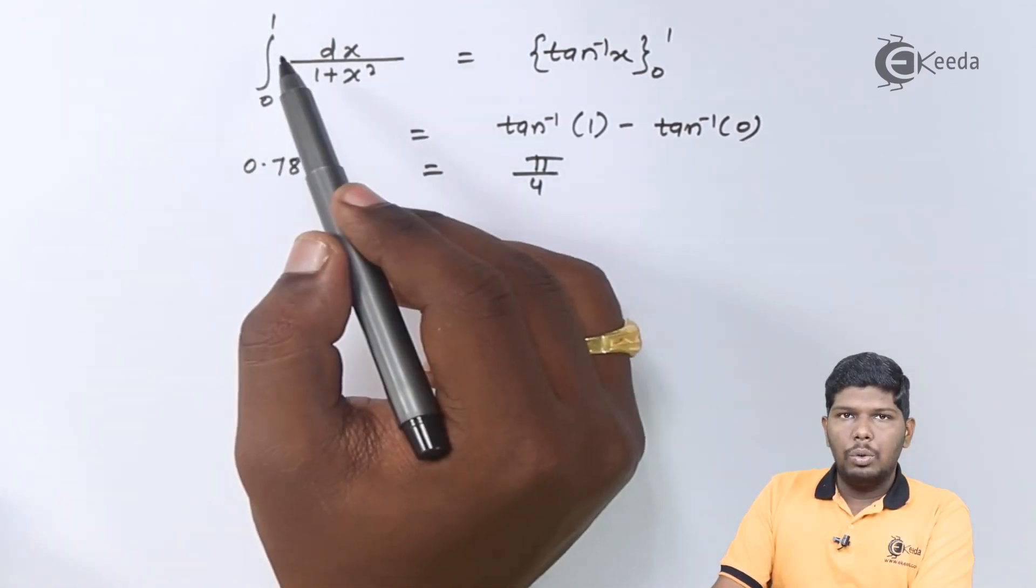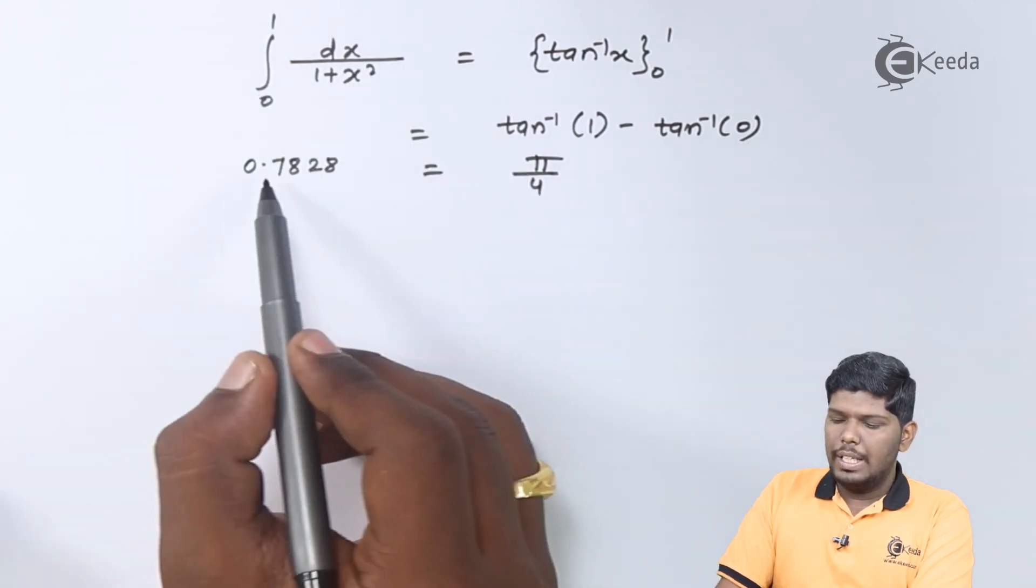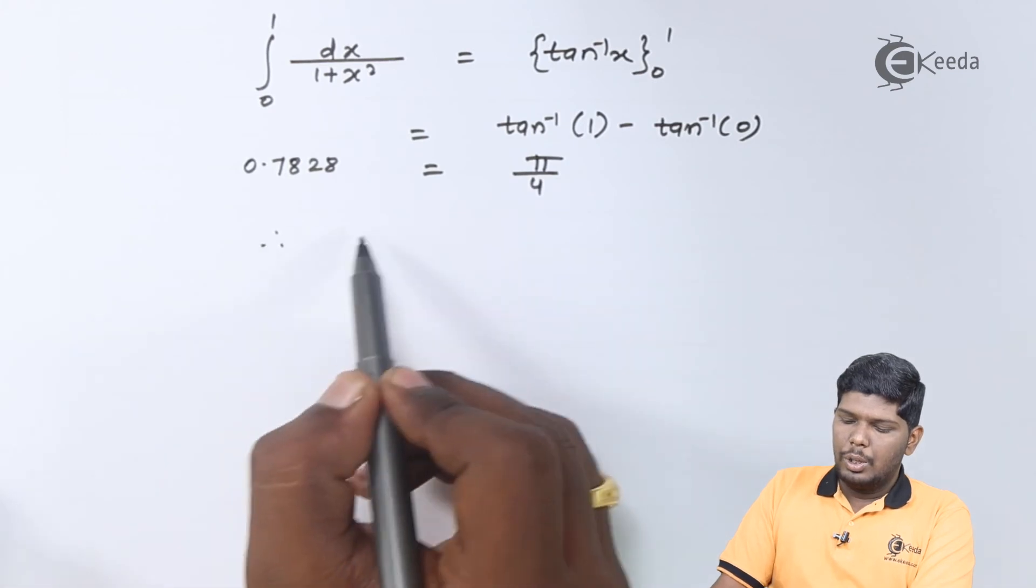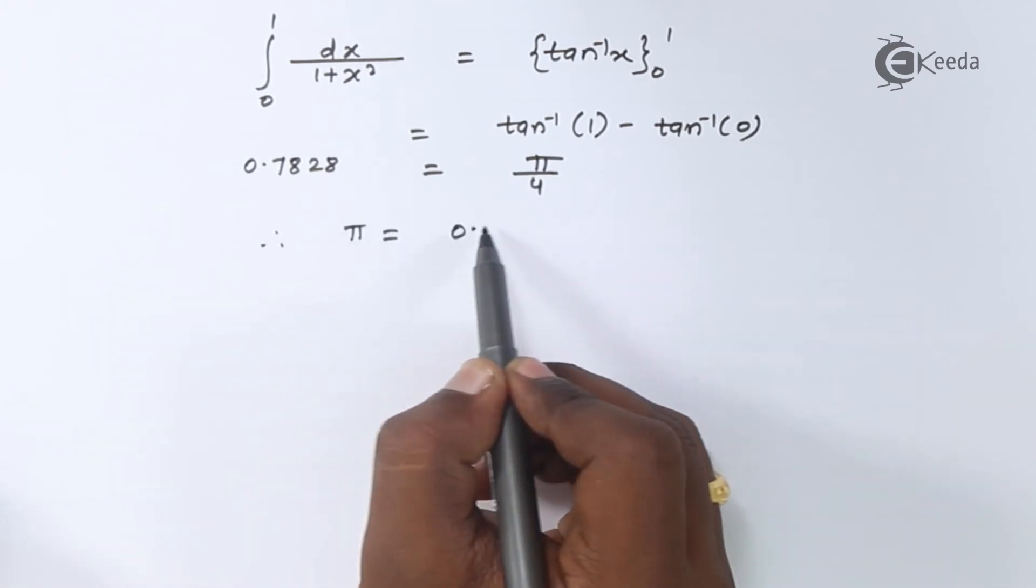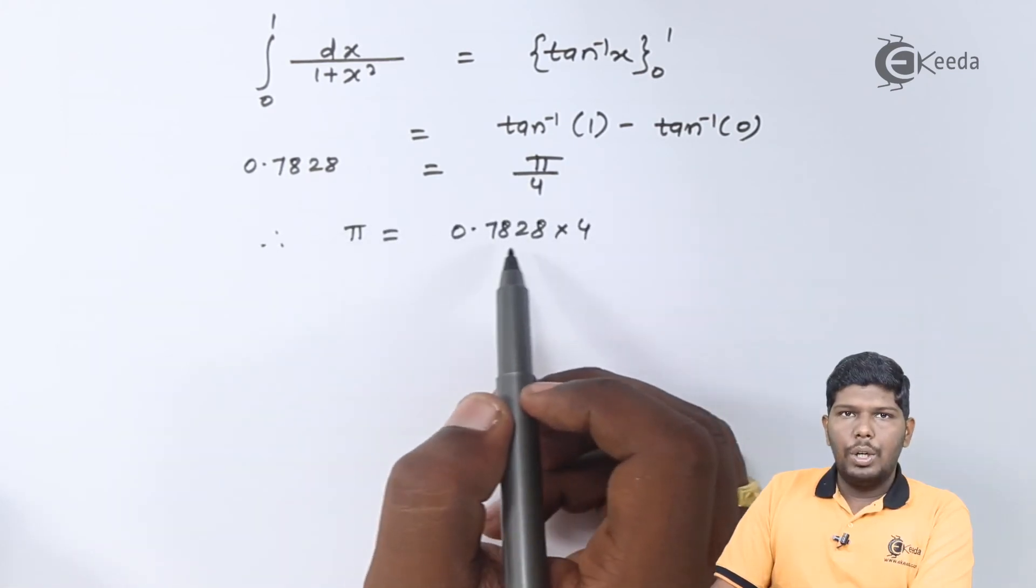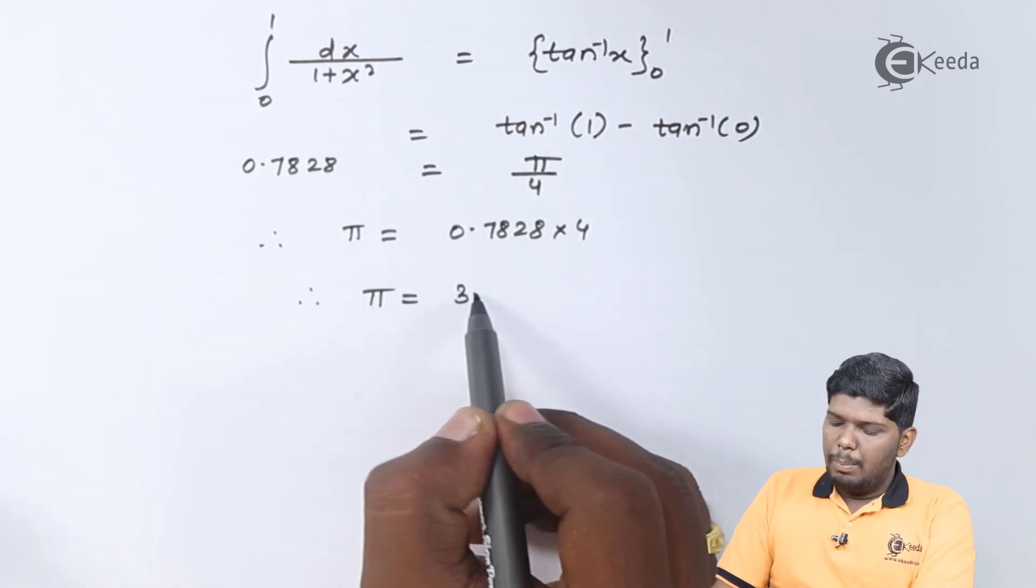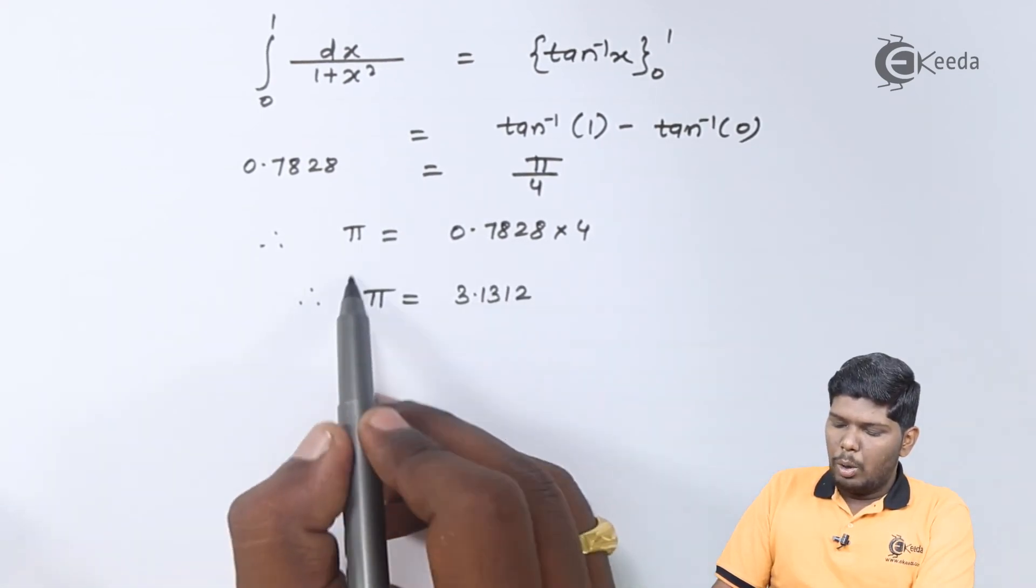So, if I substitute the value that is obtained from trapezoidal rule, it is 0.7828 and that should be equal to pi by 4. So, pi will be equal to 0.7828 into 4. That will give you 3.1312 approximately.